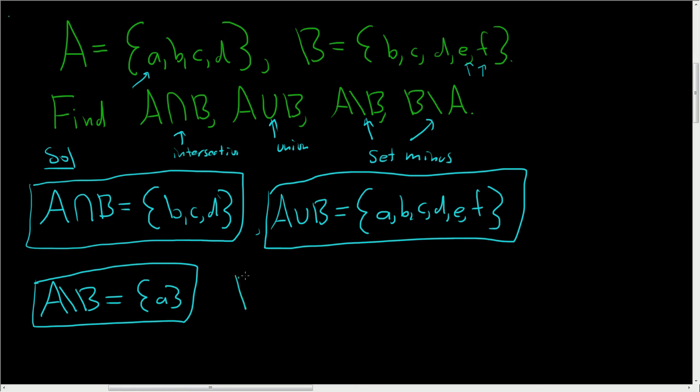All right, now let's look at B set minus A. So this is everything in B that's not in A. So let's see, E and F, right? E and F, those are the only two things that are inside B that are not in A, right? So E and F are in B, but they're not over here.